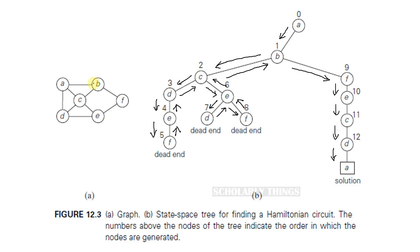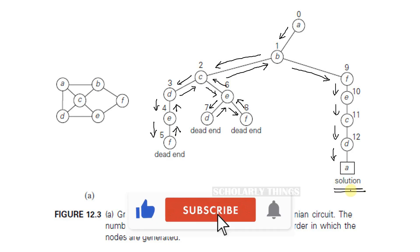A to B, B to F, F to E, E to C, C to D, then finally to A. So this is the solution for Hamiltonian circuit using backtracking.